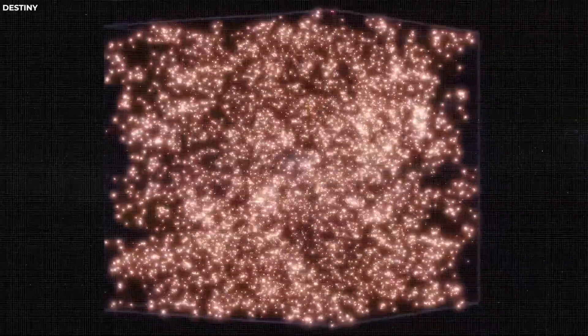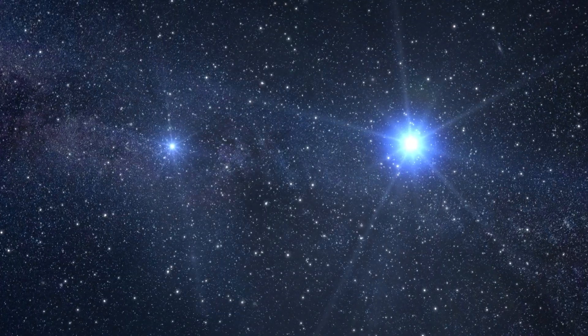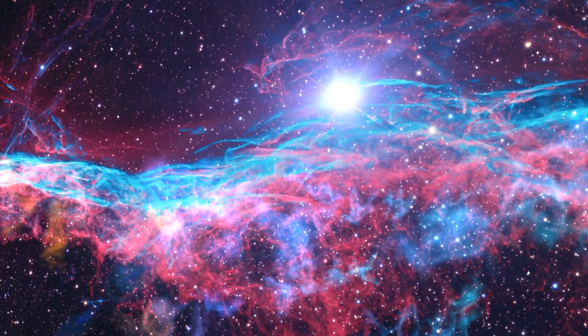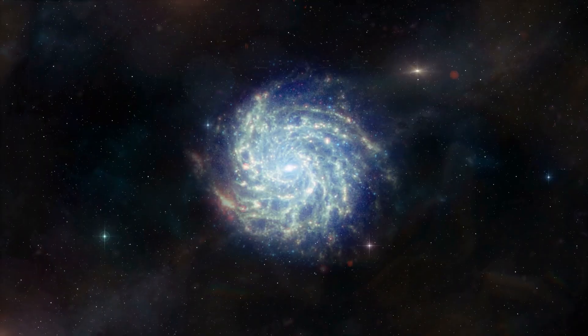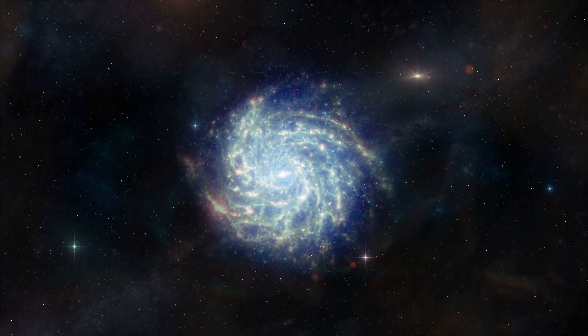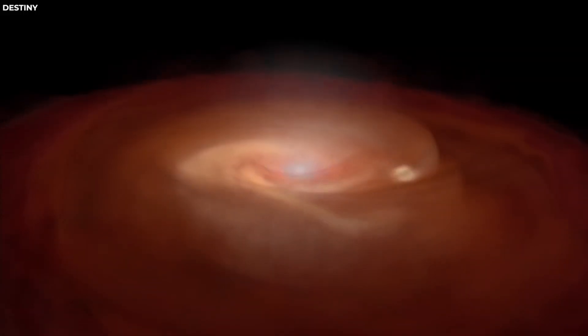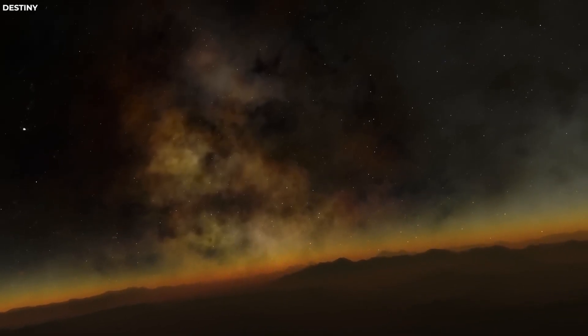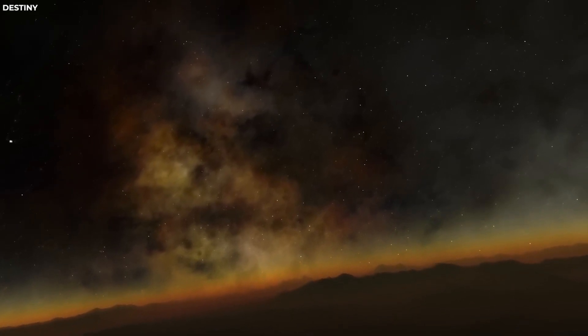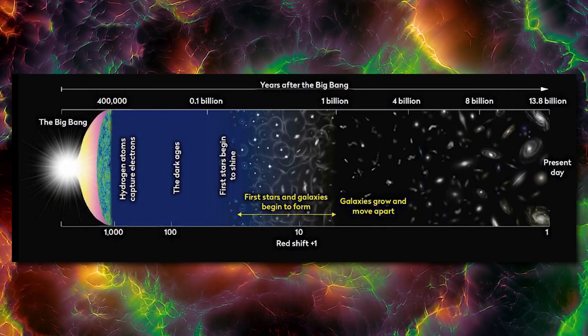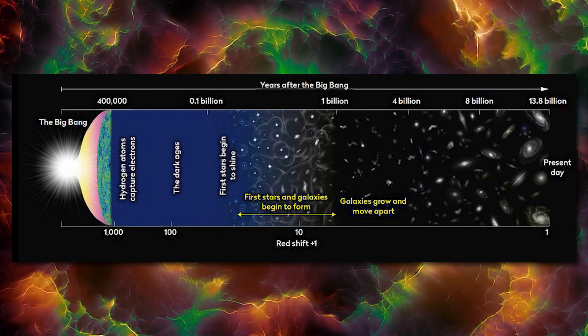These building blocks would reshape the universe into stars, galaxies, and other mysterious galactic bodies we see today. This early soup would be impossible to detect, but 380,000 years after the Big Bang, the afterglow would allow light to finally shine through. This light is referred to as the cosmic microwave background.